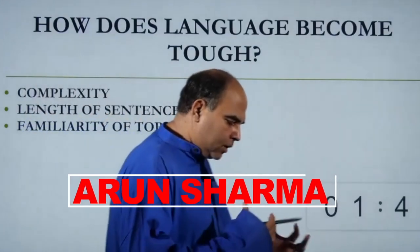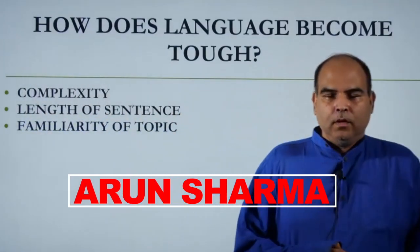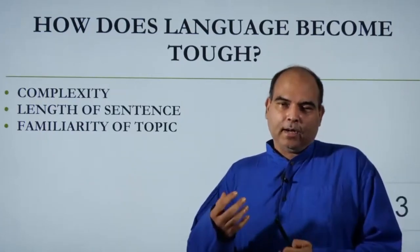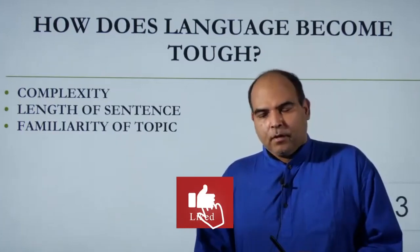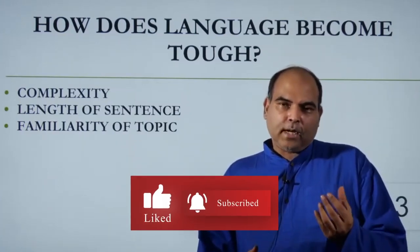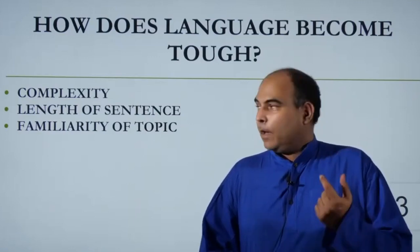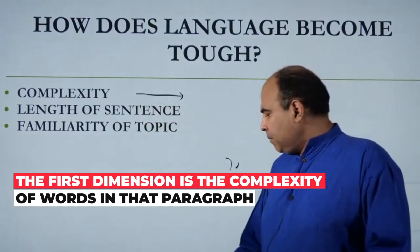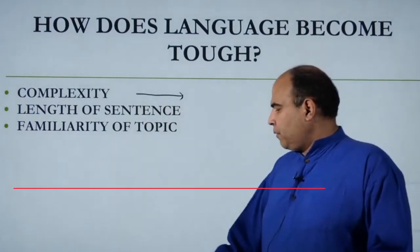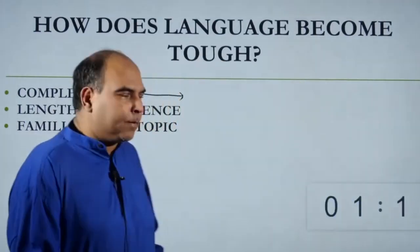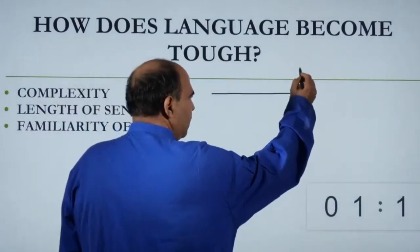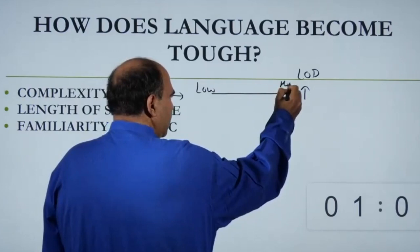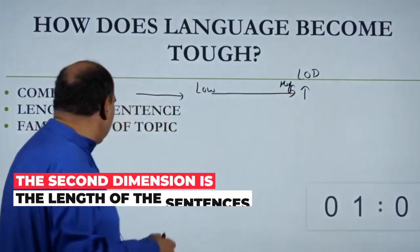You need to understand how language becomes tough. Language becomes tough on three dimensions. People tell you CAT RC is very tough and the options were very close. The first dimension is how complex the language is written — is it written in simple language or tough language? If someone is using tougher language, the difficulty level increases. As you go from low complexity to high complexity, the LOD increases.